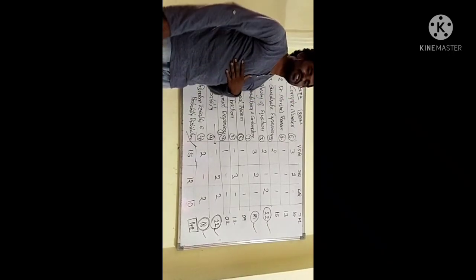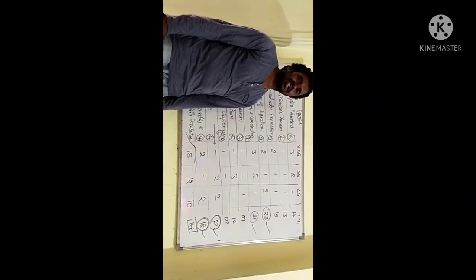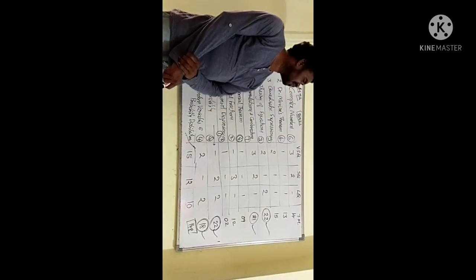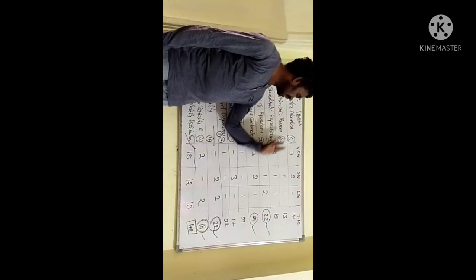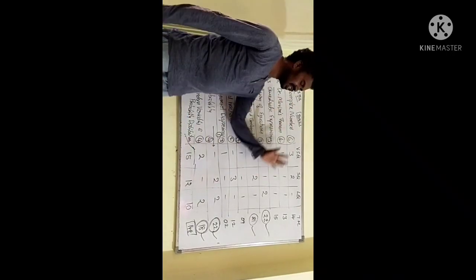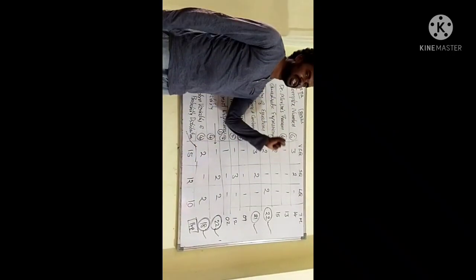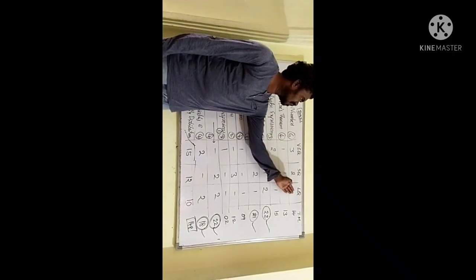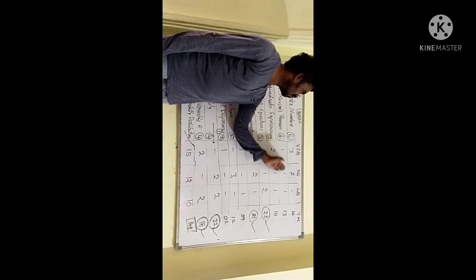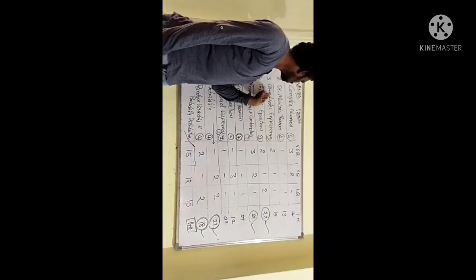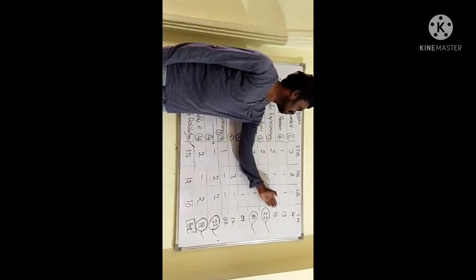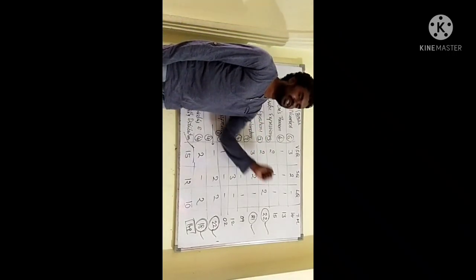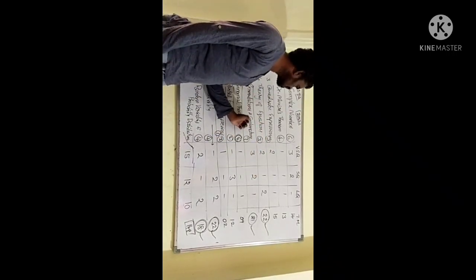Now see the blueprint. First of all, please subscribe our channel if you are newly watching and please keep the like button, give a comment whatever you feel. So here completely, 10 chapters are there in our Math 2A syllabus. First, Complex Numbers: three very short, two 4-mark, and one 4-mark, 13 marks. DeMoivre's Theorem: one, one, one, 13 marks. Quadratic Expressions: two, one, one, 15 marks.